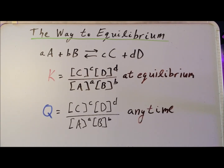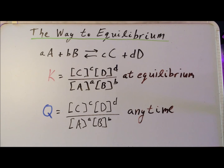We can also define a quantity called the reaction quotient, for which we use the symbol capital Q. Notice that it has an expression almost identical to the expression for the equilibrium constant. The only difference is that we can define the reaction quotient at any particular time in the chemical reaction. So while for each reaction at a particular temperature there is one and only one equilibrium constant, there are for the same reaction an infinite number of possible reaction quotients.